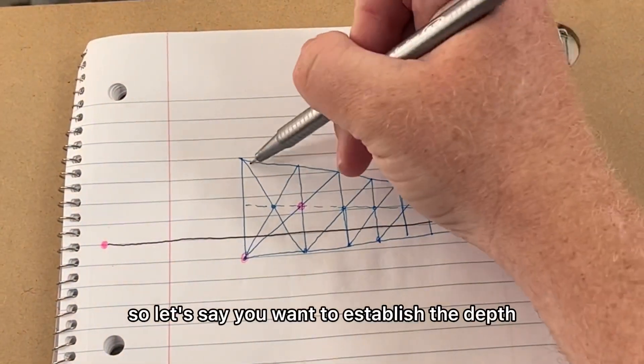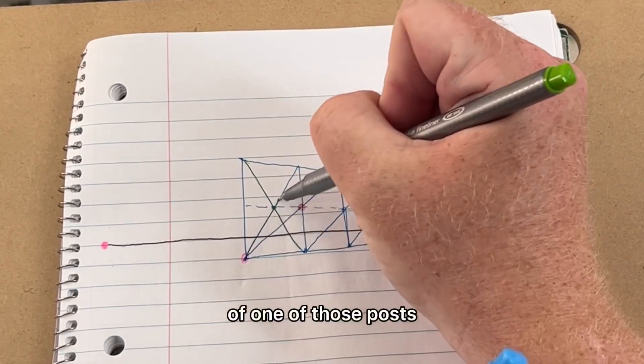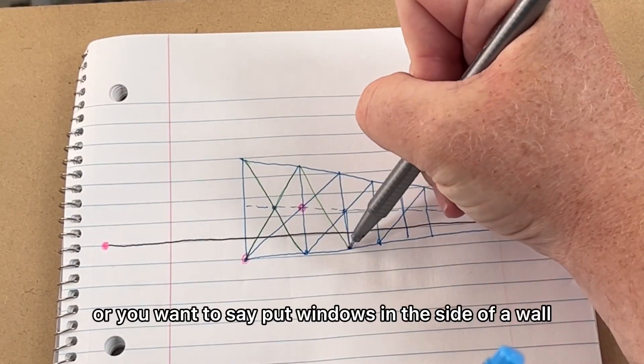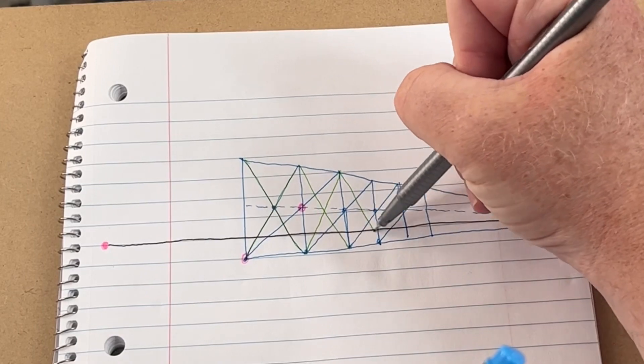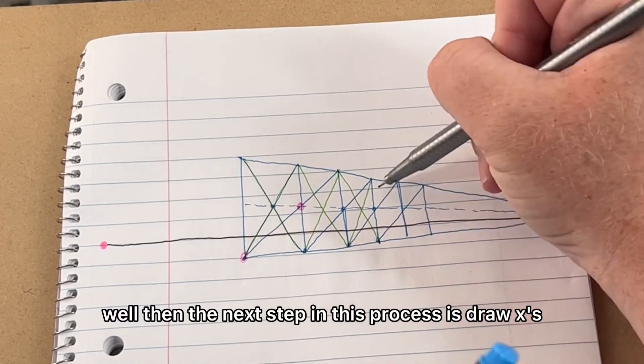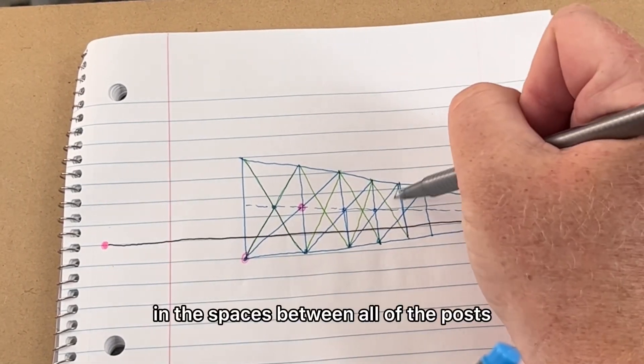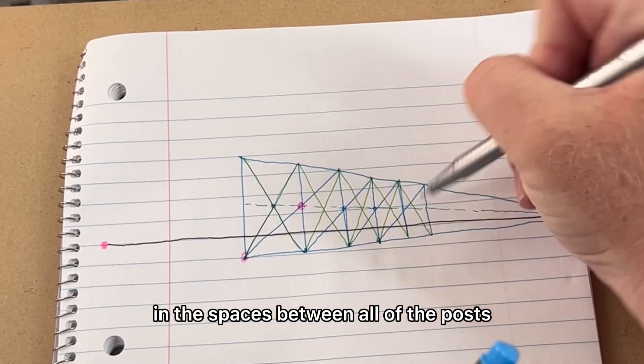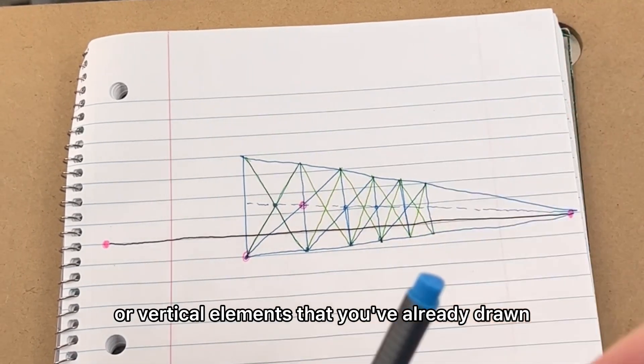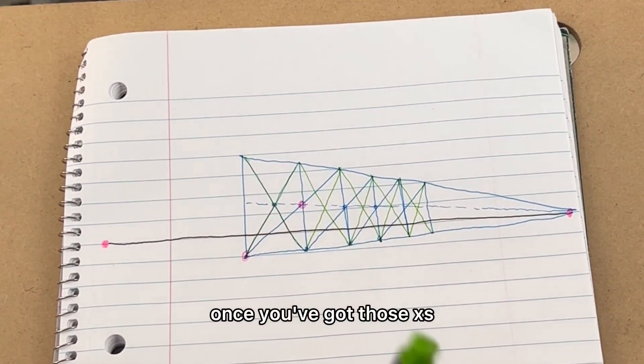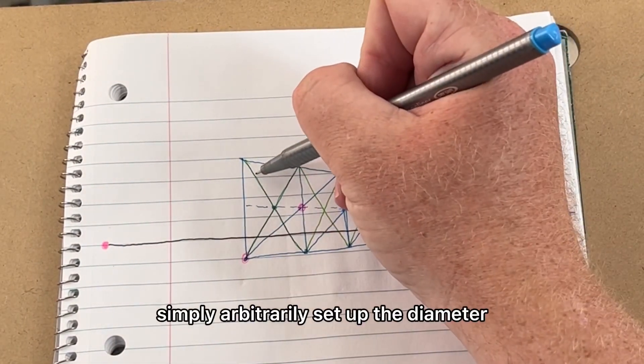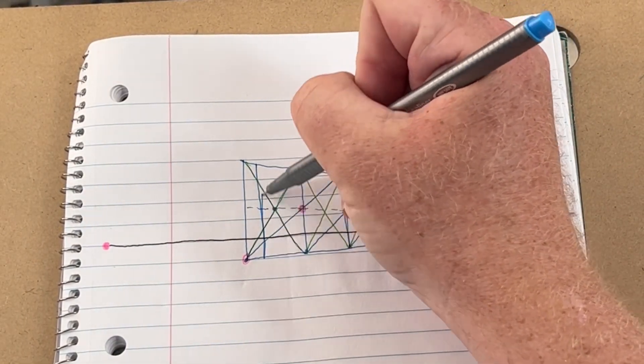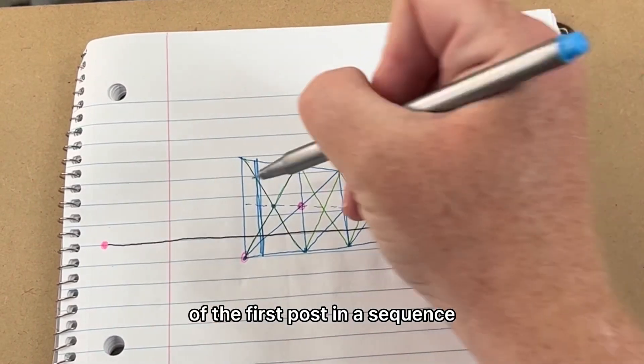Let's say you want to establish the depth of one of those posts, or you want to put windows in the side of a wall. Then the next step in this process is draw Xs in the spaces between all of the posts or vertical elements that you've already drawn. Once you've got those Xs, simply arbitrarily set up the diameter, the width that is, of the first post in the sequence.